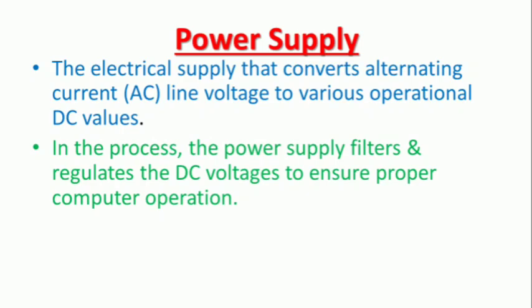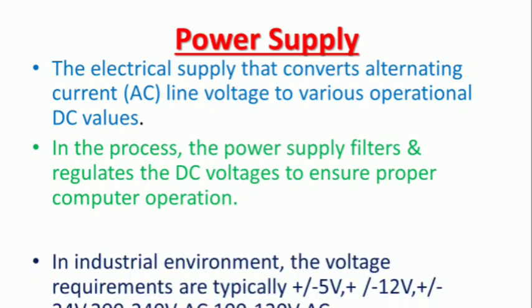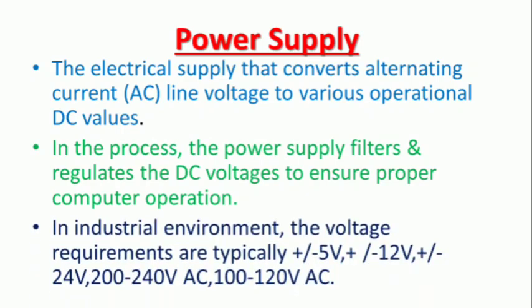The DC output is regulated. The power supply provides working voltage. The power supply working voltage is 5V. There are various voltage variables, like 5V, 12V, 24V DC, 200–240V AC, and 100–120V AC.